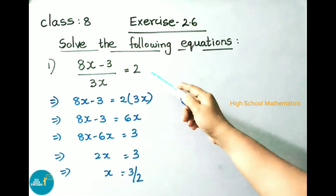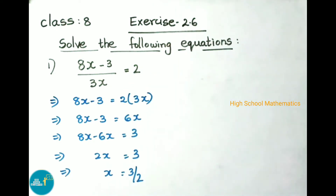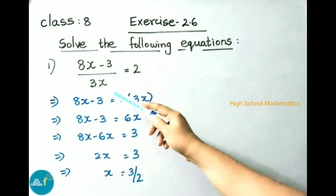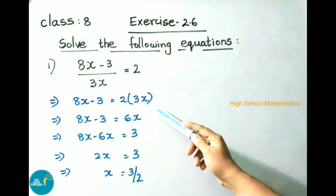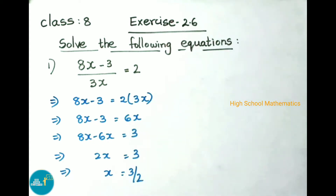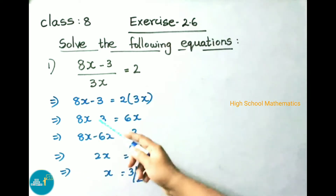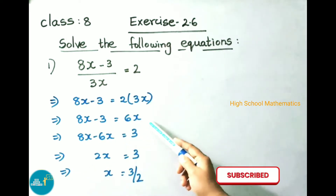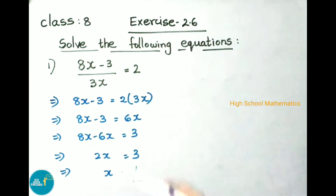First sum: (8x - 3) / 3x = 2. That implies 8x - 3 equals 3x — here 3x is going to divide, so on transposing it becomes multiply. So 2 into 3x: that implies 8x - 3 = 2 × 3x = 6x. That implies 8x, and on transposing, 6x becomes minus, so 8x - 6x equals minus 3, on transposing it becomes plus 3.